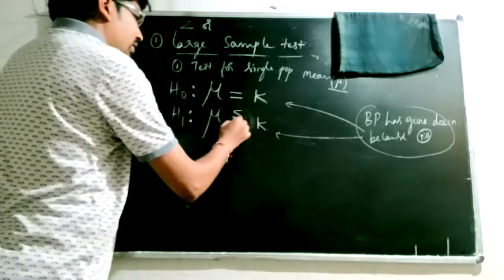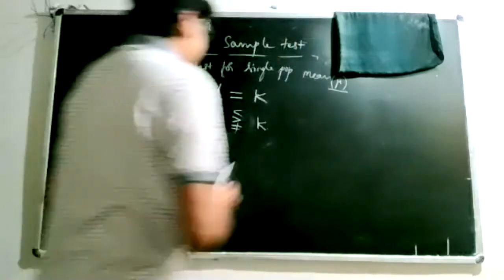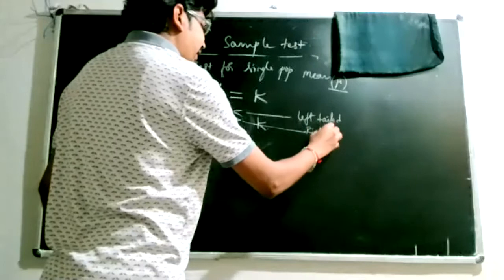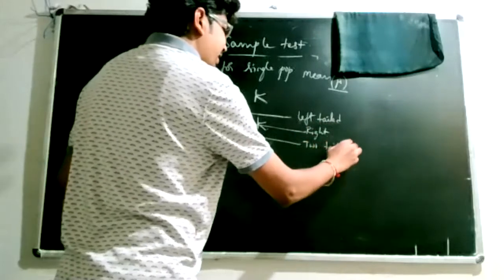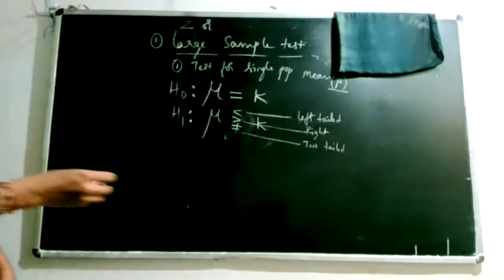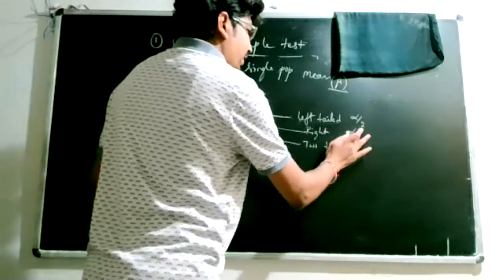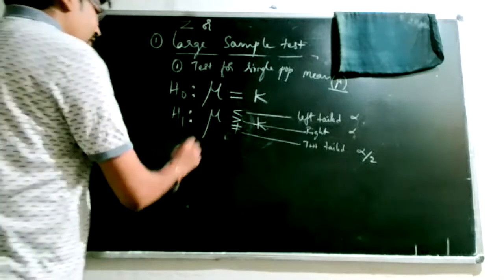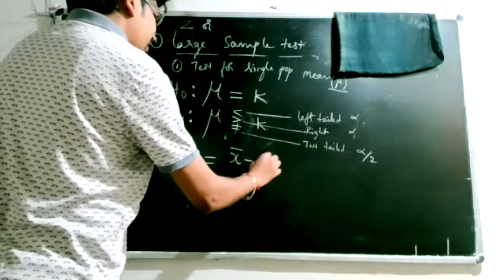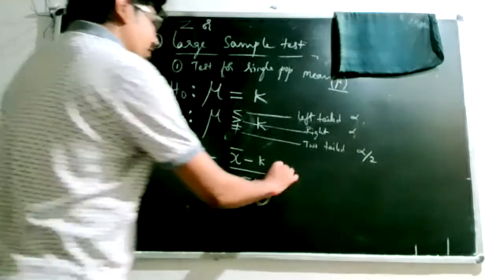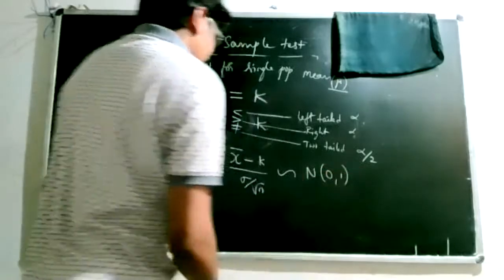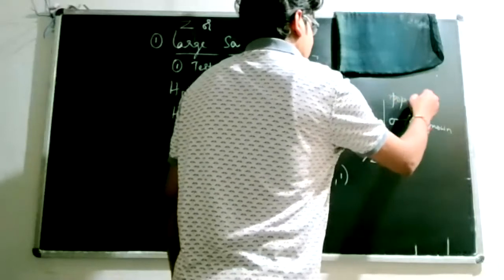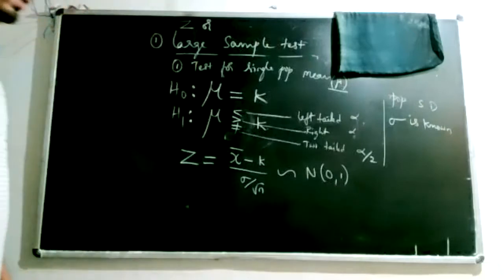If you write a less-than alternative, that indicates a left-tail test. A greater-than alternative indicates a right-tail test. A not-equal-to alternative becomes a two-tailed test. What you write in the alternative hypothesis tells you whether to use alpha by 2 or alpha as the significance level, which determines how to split the critical region.